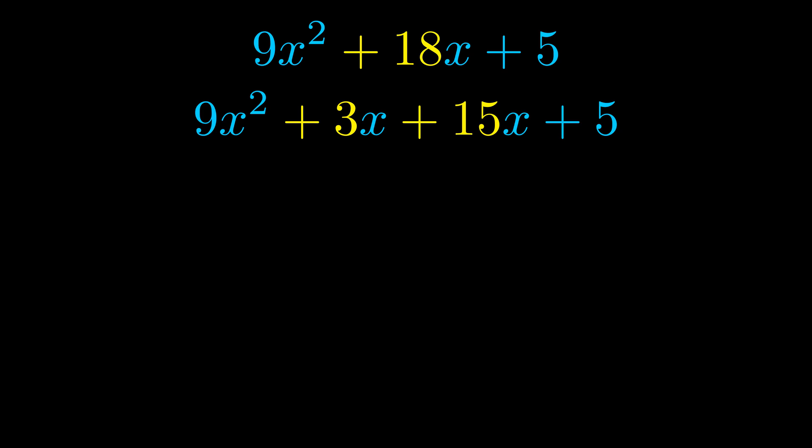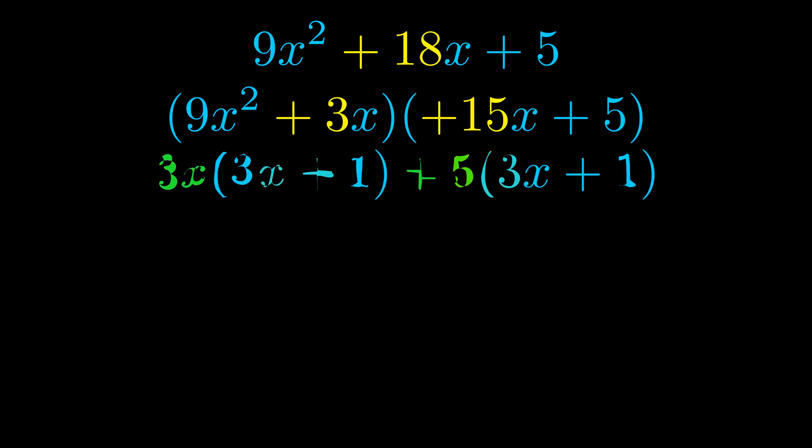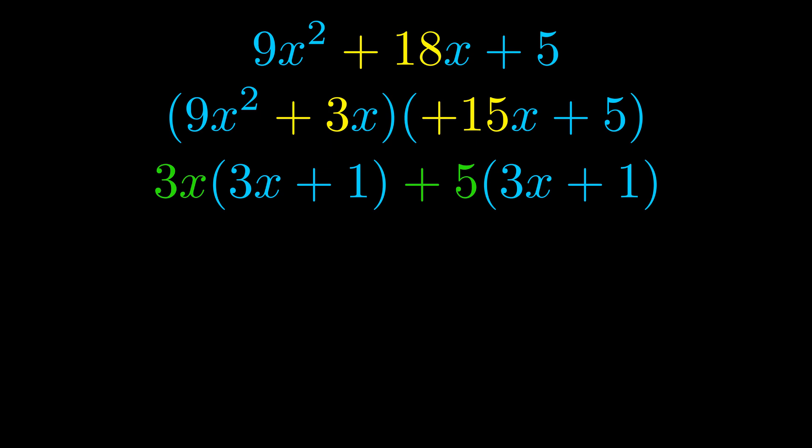Once we've done this we go ahead and put parentheses around the first term and the last term. And we do that so that we can take the greatest common factor out of both terms. We can see the greatest common factor is now outside in green. Notice also how what remains inside of the parentheses is the same in both cases.